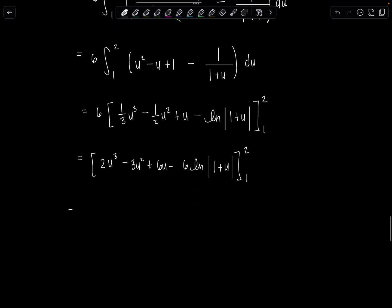And then this is the relaxing part, just don't screw up. How sad would that be? So 2 times 8 minus 3 times 4 plus 6 times 2, that's 12, minus 6 ln 3, that's the upper limit. Minus lower limit is going to be 2 minus 3 plus 6 minus 6 ln 2.